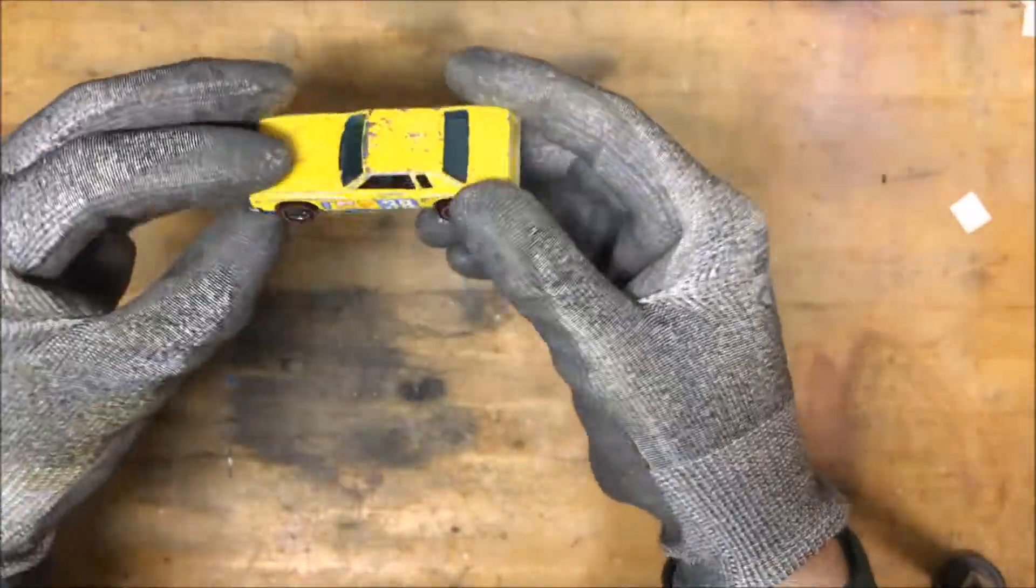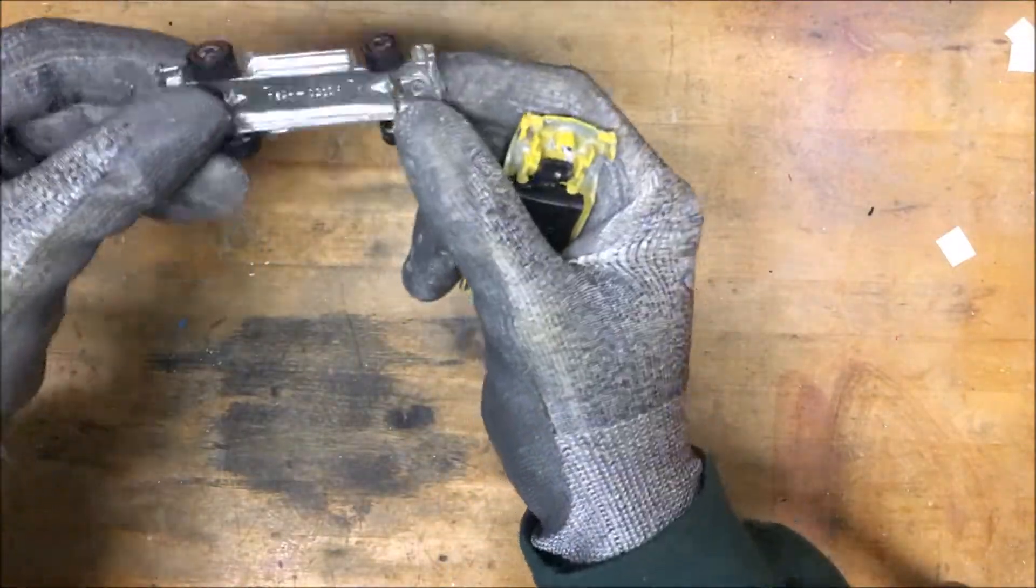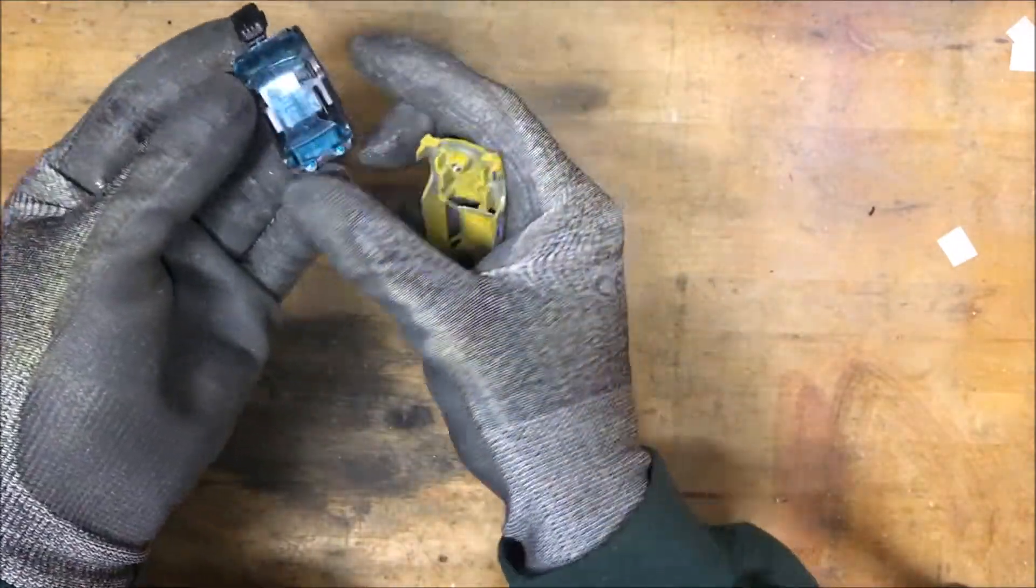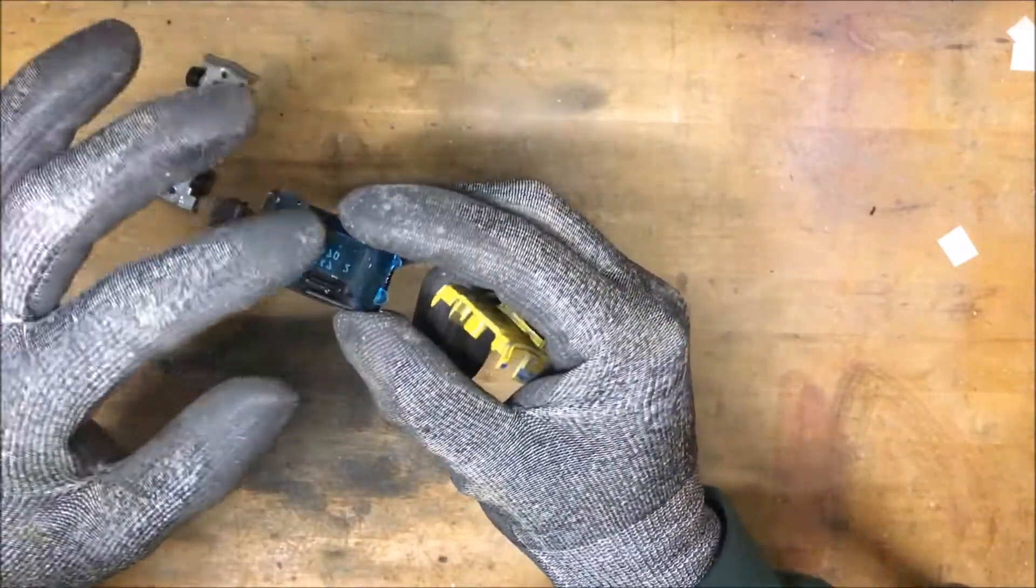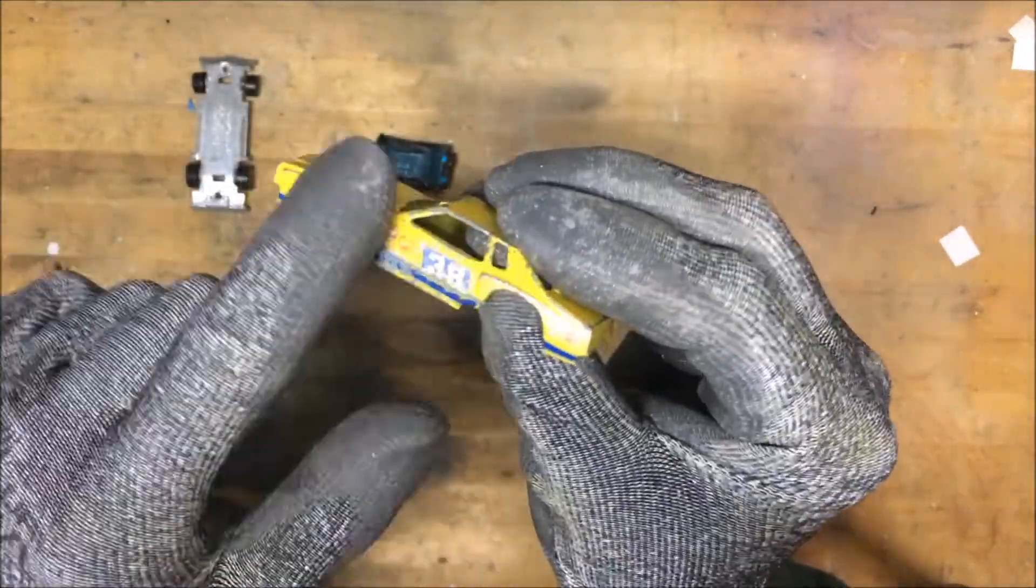But first let's drill out the rivets. So for some reason it didn't record, I have no idea why. But after taking off the base, we take out the interior, the black interior and the window that's actually in pretty good condition. And we take a closer look at the body.